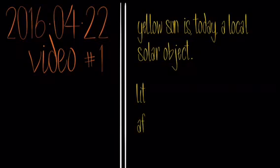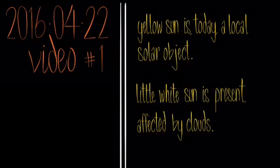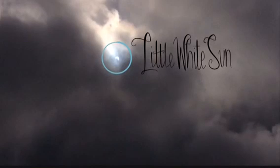The yellow sun looks like the local solar object we've discussed, and the little white sun is present but very affected by clouds, so we're going to take a closer look at that. For those of you new to my videos, here's what I mean by the little white sun. This is in addition to the yellow local solar object. I don't know if this is what's present in the sky all the time, but certainly today it was a local object.